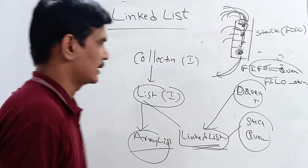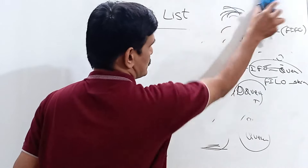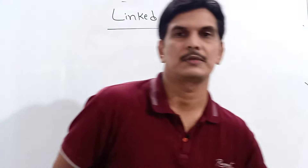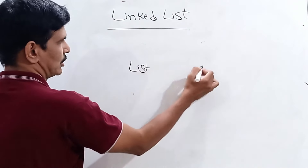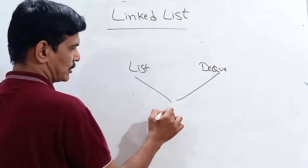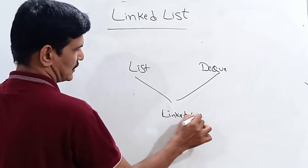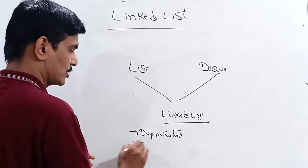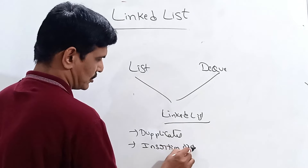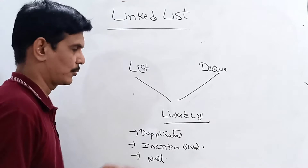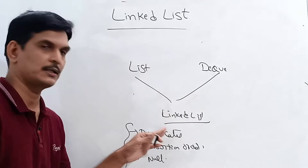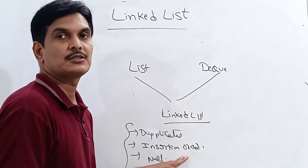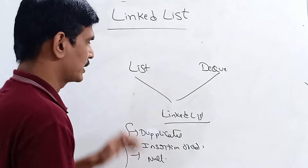In conclusion about LinkedList: it is a class implementing methods from both List and Deque interfaces. LinkedList allows duplicates, insertion order is preserved, and null values are accepted — same as ArrayList. The difference is that ArrayList stores elements in consecutive memory locations, while LinkedList stores elements randomly, linked internally by node addresses. LinkedList follows the doubly linked list data structure by default.